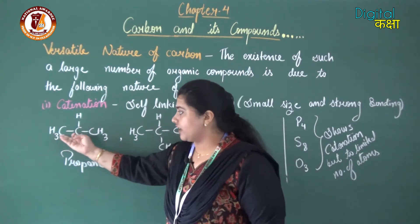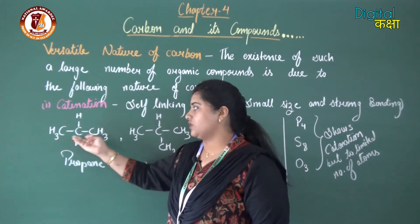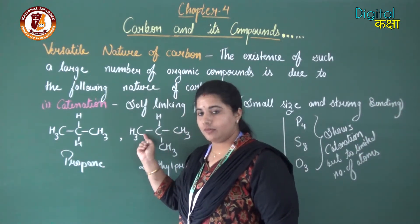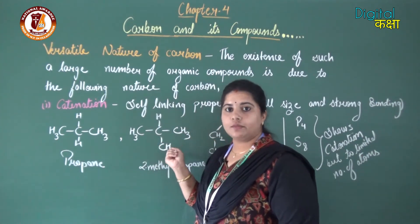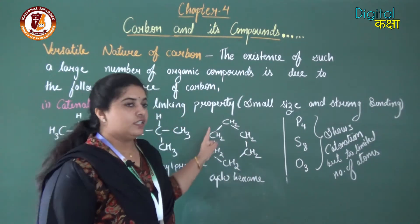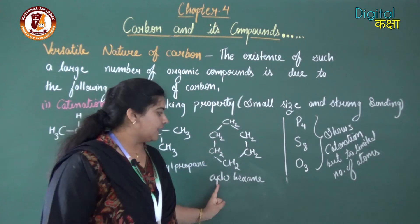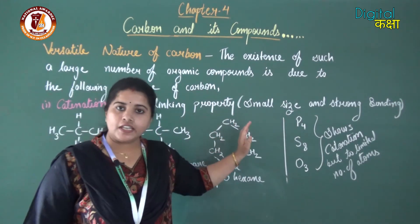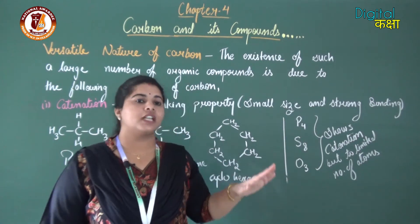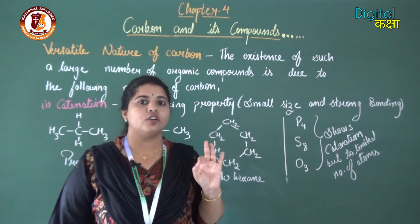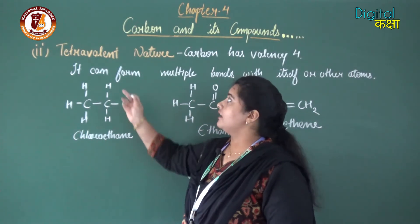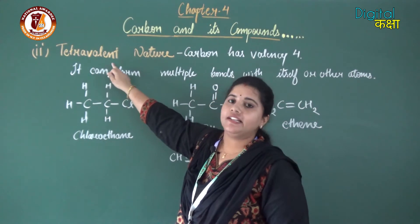Carbon can form a straight chain — for example, propane has three carbons in a straight chain. Carbon can also be attached in a branch — for example, 2-methylpropane has a main chain with three carbon atoms and one carbon in a branch. Carbon atoms can also join in a ring — for example, cyclohexane has six carbons joined in a ring. So carbon can form straight chains, branched chains, and cyclic chains, which is a major reason for its versatile nature.